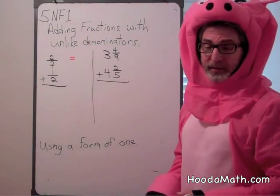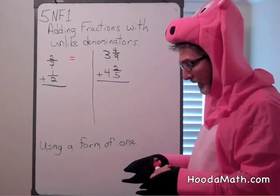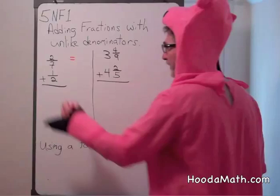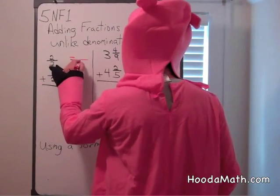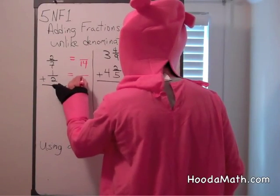We cannot add them until we change to common denominators. The common denominator is found by multiplying the 2 denominators. 7 times 2 is 14. Our new denominators will be 14.